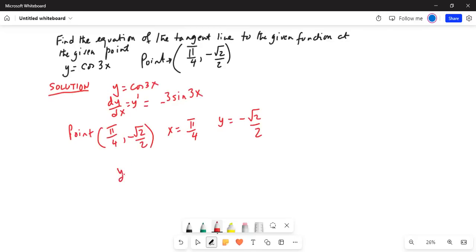So y prime at pi by 4 is equal to minus 3 sine 3 pi by 4, which is basically minus 3 sine 135 degrees, which falls in the second quadrant and is same as minus 3 sine of 135 degrees. Your calculator will give you square root of 2 by 2.